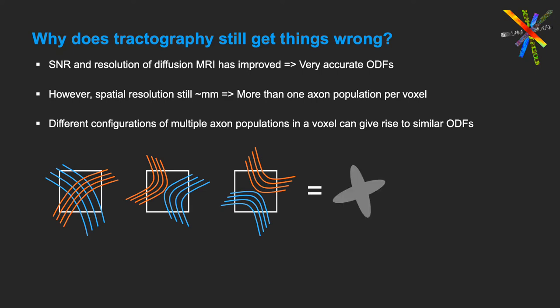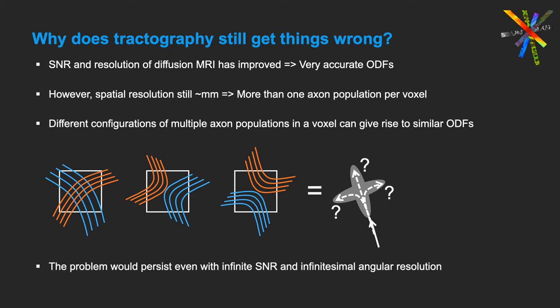When a tractography algorithm reaches this voxel, it doesn't know which of the ODF peaks to follow, because it doesn't know which of the three configurations on the left is true. As a result, it has to make an arbitrary choice, and this inevitably leads to errors, even if the ODF is very accurate. In fact, this ambiguity would persist even in the presence of infinite SNR and infinitesimal angular resolution, suggesting that this is not a problem that will be solved by better data alone.